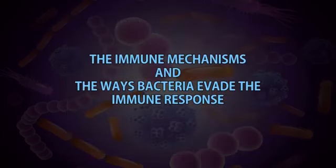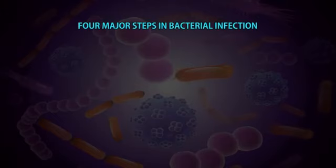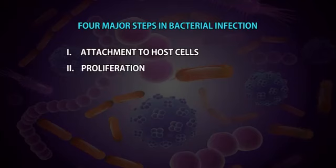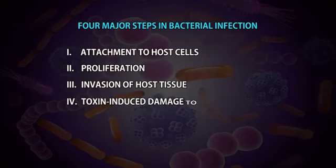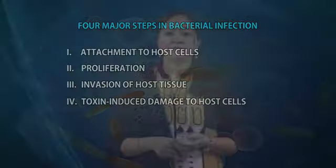The immune mechanisms and the ways bacteria evade the immune response. There are four major steps in bacterial infection: attachment to host cells, proliferation, invasion of host tissue, and toxin-induced damage to host cells. The host immune system acts at each of these steps, and many bacteria develop ways to evade the host defense mechanisms.